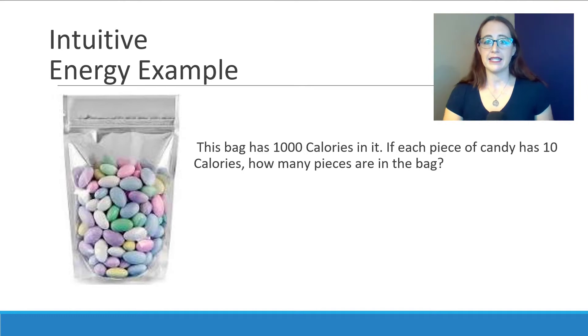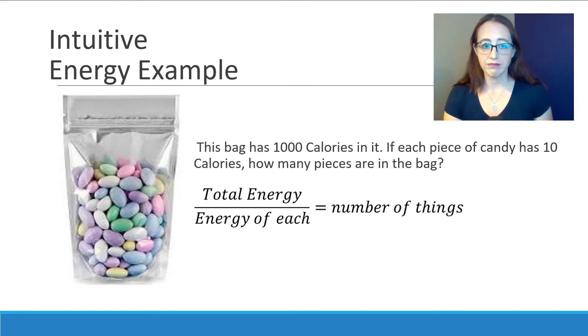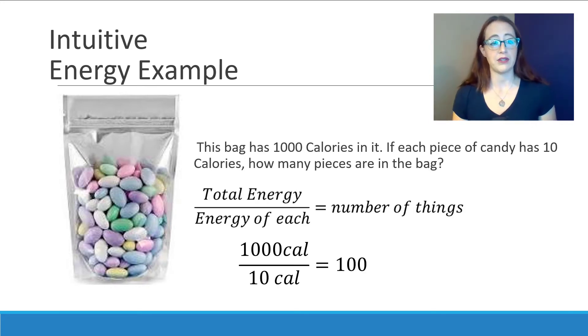Often when I ask this, people in class will shout out 100. And that's right, but we want to think about where that 100 comes from so that we can use that same method for our harder problems. So we got this by taking our total energy, our 1000 calories, and dividing by the number of calories of each one. In other words, we took the total energy divided by the energy of each thing. And then when we did that, we got our number of things. So 1000 calories divided by 10 is 100 calories.